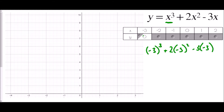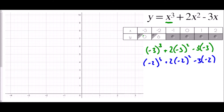We just need to repeat that for each of the other values. Moving on to negative 2, I delete the contents of the bracket and replace it with negative 2, giving an answer of 6. Continuing, the values are 4, then 0, then 0 again, then 10. Now I want to plot each of those points onto the graph: negative 3 gives 0, negative 2 gives 6, negative 1 gives 4, 0 gives 0, 1 gives 0, and 2 gives 10.